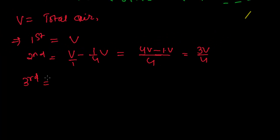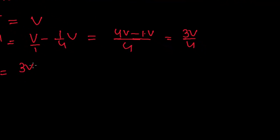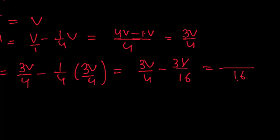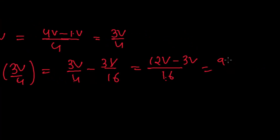When the pump operates a second time, it again removes one-fourth of whatever air is remaining, which is (3/4)V. So the air remaining is (3/4)V minus one-fourth of (3/4)V. Taking LCM of 4 and 4 which is 16: that gives 12V minus 3V, all over 16, which is 9V upon 16. I can also write this as (3/4)²V.